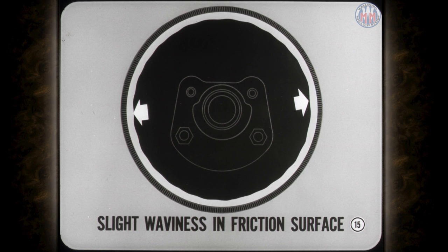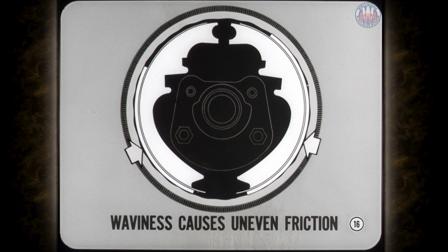Okay, Bill. I'm sold on testing, but I don't understand the effects of those drum conditions. Well, the irregularity can be a slight waviness in the friction surface of the brake drum. This is usually a new drum condition and is not the same as oval or out-of-round distortion. The surface waviness causes uneven friction, which produces the vibration we call chatter. Even though new drums are precisely machined, the friction surface can change slightly as the drums break in, especially if the brakes get extra heavy use during this period.